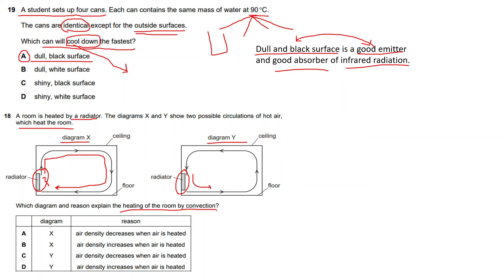The question asks which diagram and reason explain the heating of the room by convection. If we look at Y, remember hot air will always rise—hot air can never sink. So diagram Y can be ignored because it's showing a downward arrow, which means it's sinking. So C and D are not the answers. When we look at diagram X, the radiator is heating the air, which is rising. This is a characteristic of hot air because hot air rises, cool air sinks. Now why is it rising? We have two options: air density decreases when air is heated, and air density increases when air is heated.